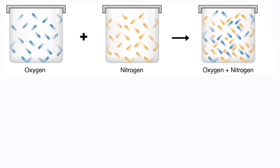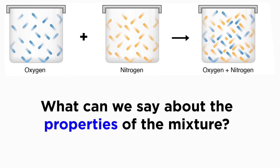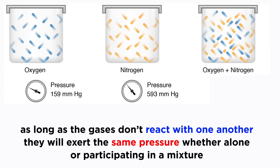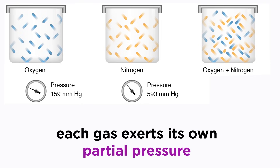If we take two different gases and mix them together, will there be any new properties that can be observed? What will be the total pressure? It is the case that as long as these gases do not react with one another, the pressure that each gas exerts in a mixture of gases is specific to the amount of that particular gas that is present, and we will call the pressure of that particular gas its partial pressure.